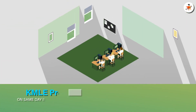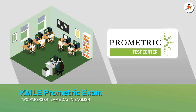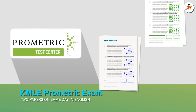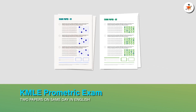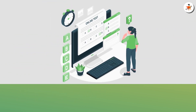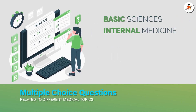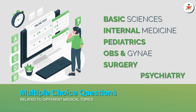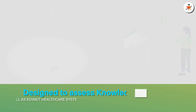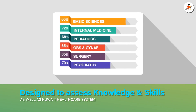Kuwait Medical Licensing Exam is a computer-based exam conducted by Prometric Testing Service worldwide. This exam consists of two papers conducted in English on the same day with a two to three hour gap, having multiple choice questions covering multiple medical specialties, like basic sciences, internal medicine, paediatrics, obs and gynae, surgery and psychiatry. Each of these papers is designed to evaluate candidates' level of knowledge skills, as well as understanding of medical practices and regulations in Kuwait.